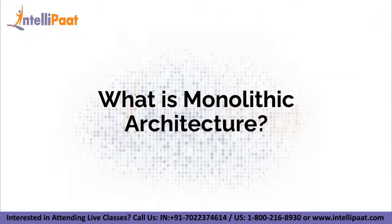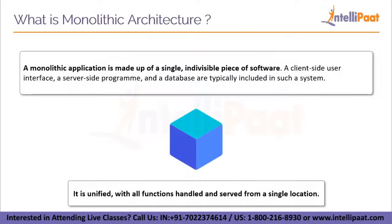Now let us take a look at monolithic architecture. Monolithic architecture is regarded as a conventional method of developing applications. A monolithic application is made up of a single, indivisible piece of software — a client-side user interface, a server-side program, and a database are typically included. It is unified with all functions handled and served from a single location. Monolithic applications are characterized by a single large code base and a lack of modularity. Developers use the same code base when they wish to update something, making changes to the entire stack at the same time.